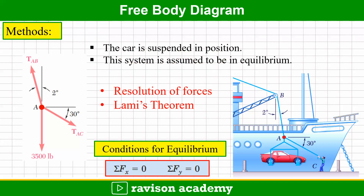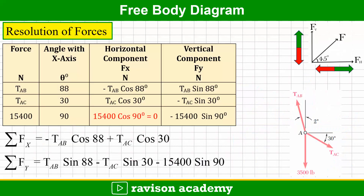This problem can be solved by two methods: resolution of forces, or Lami's theorem. For the resolution of forces method, we draw the free body diagram and set up a tabular column representing each force and its angle with respect to the x-axis. Three forces act: T_AB at 88 degrees, T_AC at 30 degrees, and the weight of 15400 Newtons at 90 degrees. The horizontal component is F·cos θ and the vertical component is F·sin θ.